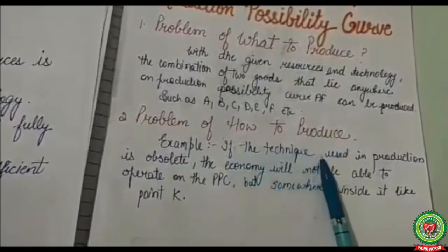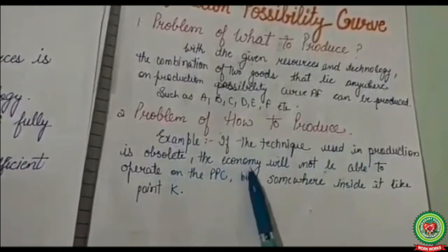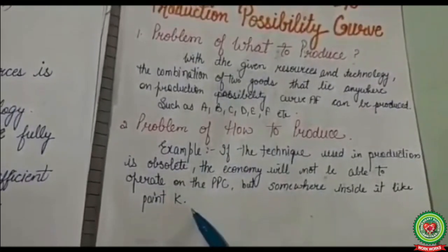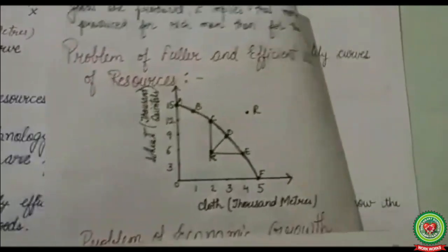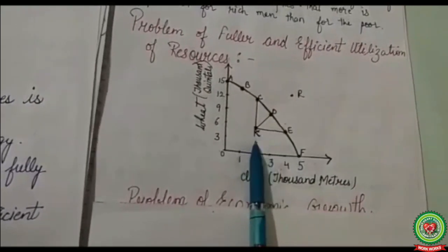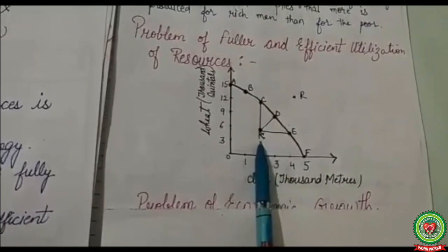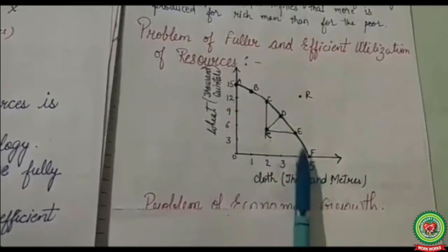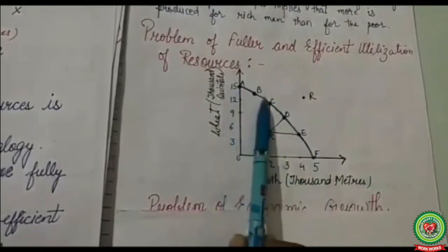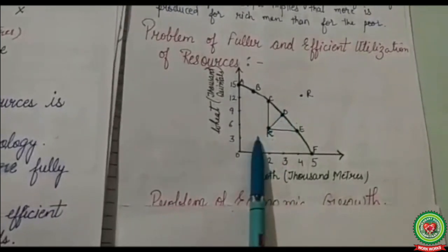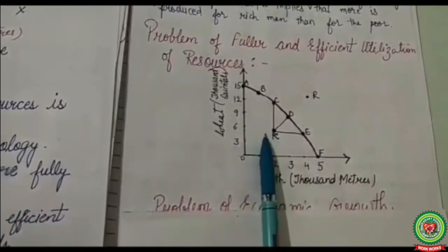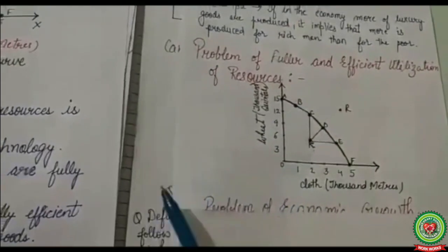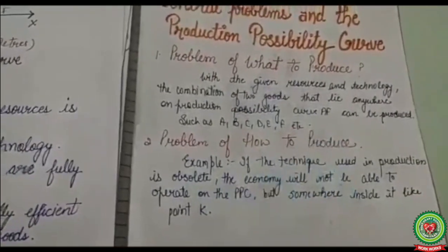The second problem is how to produce. If the technique used in production is obsolete, the economy will not be able to operate on the Production Possibility Curve, but somewhere inside it — for example, at point K. This means resources are not being fully utilized and the economy cannot operate on the curve from A to F. The economy must change its technique of production to achieve fuller utilization of resources.